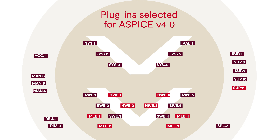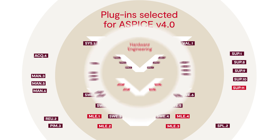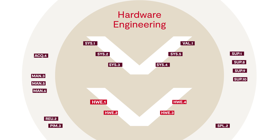There are plans to adopt other models into ASPICE 4.0 at a later date as well. In version ASPICE 4.0, this concerns hardware development: four hardware-specific processes enable domain-specific development within the framework of Automotive SPICE.